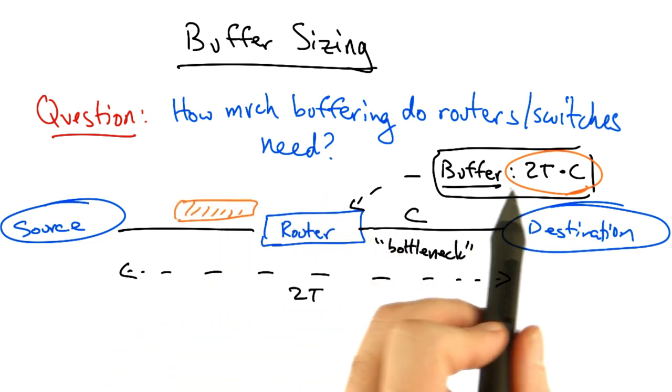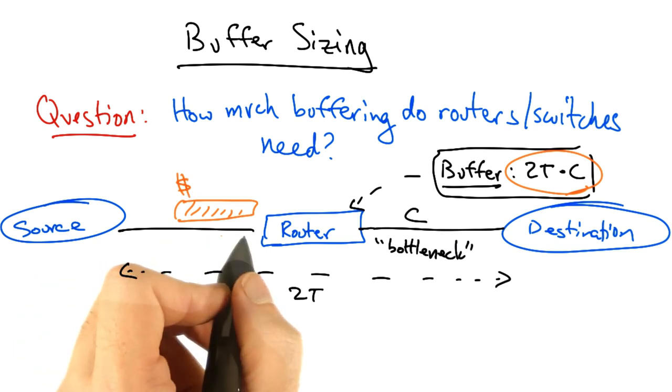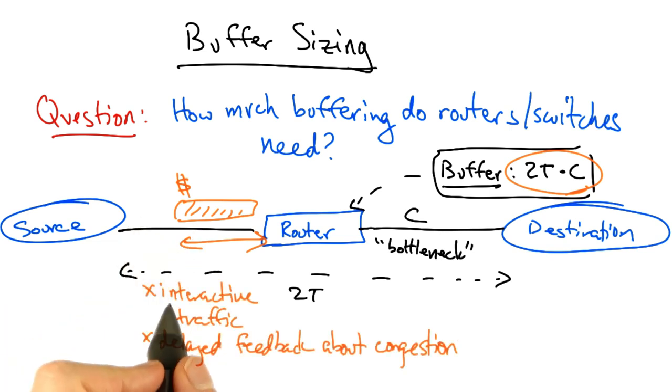The other thing of course is that the bigger these buffers, not only the bigger the cost, but also the bigger the queuing delay that could exist at any given router. And hence, the more delay that interactive traffic may experience, and the more delay that feedback about congestion will experience. The longer these delays are, the longer it will take for the source to hear about congestion that might exist in the network.